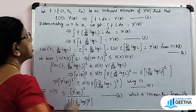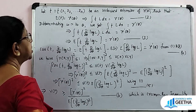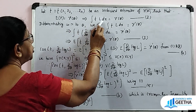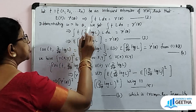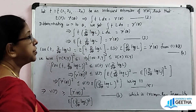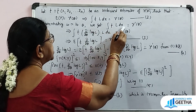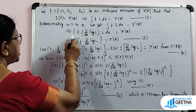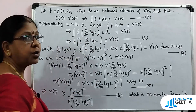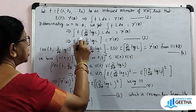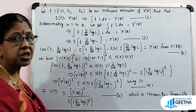Let t = t(x1, x2, ..., xn) be an unbiased estimator for γ(θ), such that E[t] = γ(θ), which implies ∫ t · L dx = γ(θ). That is equation 2. Differentiating with respect to theta and differentiating under the integral sign, we get ∫ t · (∂/∂θ log L) · L dx = γ'(θ), which implies E[t · (∂/∂θ log L)] = γ'(θ). That is equation number 3.